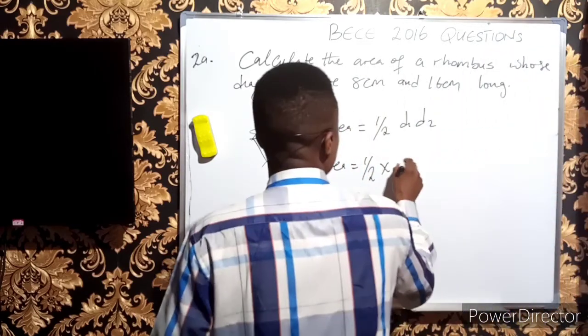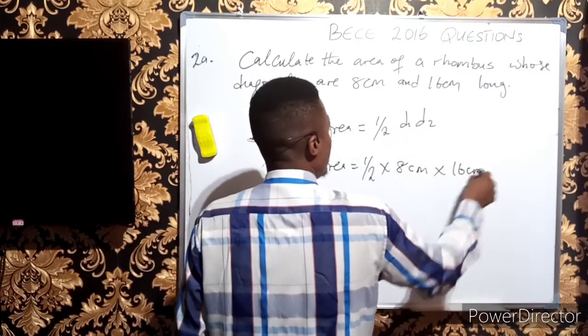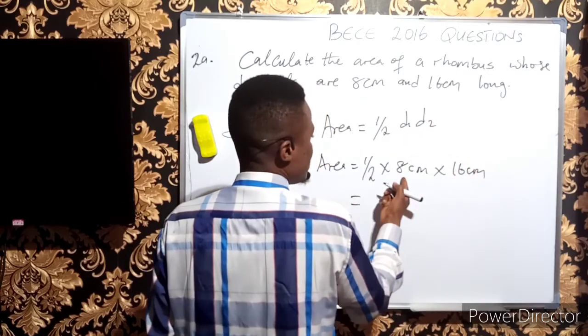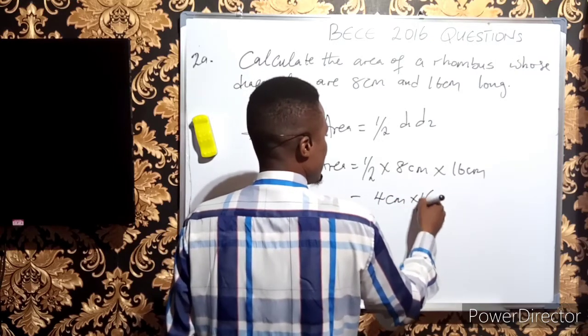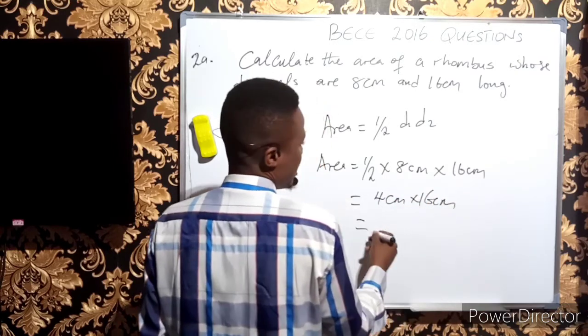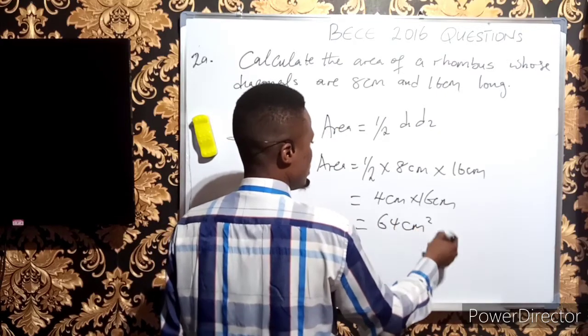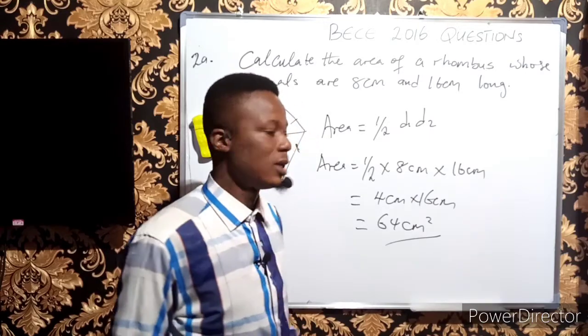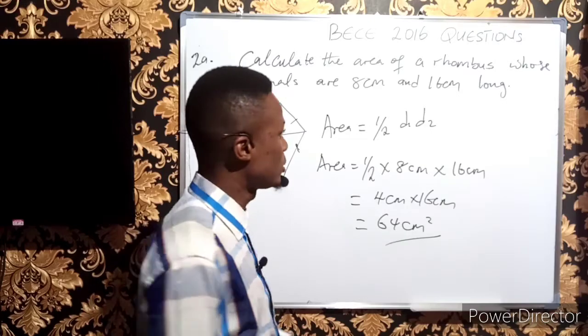The area equals ½ × 8 cm × 16 cm. Half times 8 is 4, so we have 4 cm × 16 cm. Multiplying 4 by 16 gives 64 cm². This is the area of the rhombus. Finally, let us conclude with the last question.